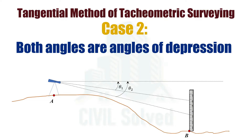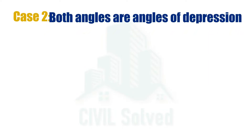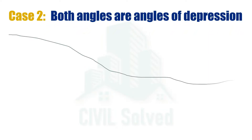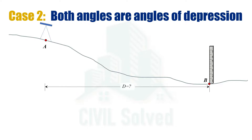In this video I am going to talk about Case 2 of the tangential method of tacheometric surveying, in which both angles of the target are angles of depression. This is a cross-section of land on which two points are given, point A and point B. At one point the instrument is placed, at another point the staff is placed, and the distance between them is required.